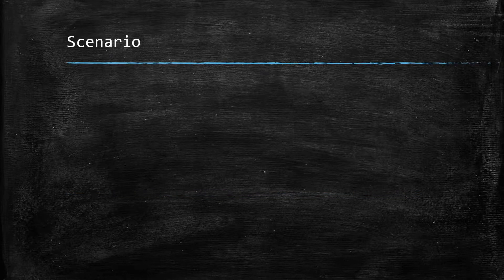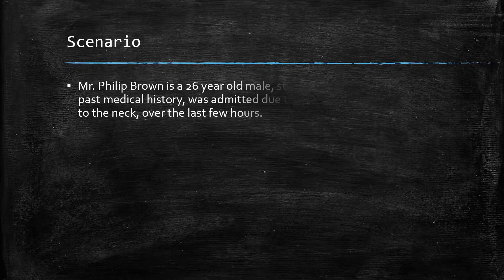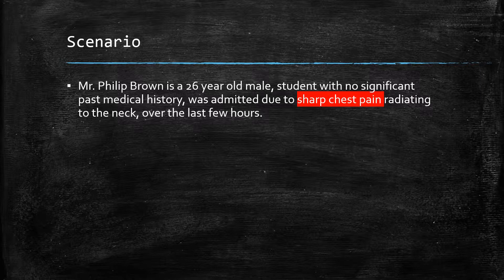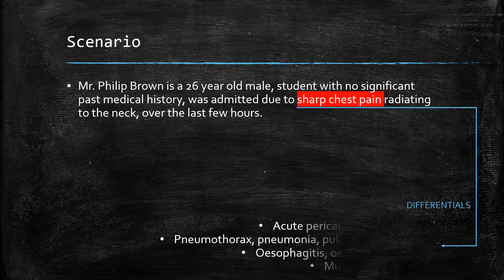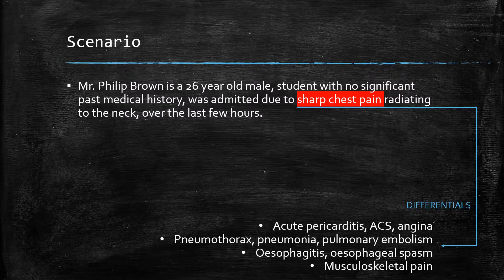We will be looking at a case of acute pericarditis. Mr. Philip Brown, a 26-year-old student, was admitted due to sharp chest pain radiating to the neck. We would stop and go through the potential causes of this chest pain. They include acute pericarditis, acute coronary syndrome, angina, pneumothorax, pneumonia, pulmonary embolism, esophagitis, esophageal spasm, and musculoskeletal pain.